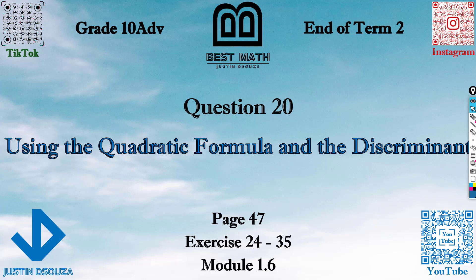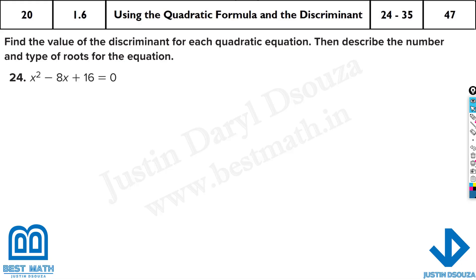The final question in the writing part, question 20, is about discriminants. It's from module 1.6. Though they have asked you about the quadratic formula, they are just asking you to find the discriminant for this given quadratic function.